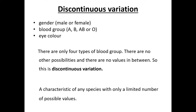Discontinuous variation results in a limited number of phenotypes with no intermediates. Examples include gender, blood group, eye colour, and tongue rolling. There are only four types of blood groups, so there are no values in between — that makes it a discontinuous variation, and it is represented in a bar chart.